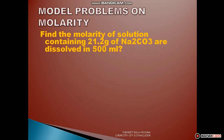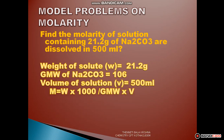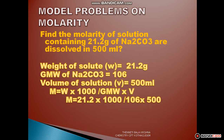Problem 4: Find the molarity of a solution containing 21.2 grams of Na2CO3 dissolved in 500 mL of solution. Given: weight W is equal to 21.2 grams. The gram molecular weight of Na2CO3 is 106, calculated as 2 into 23 plus 12 plus 3 into 16. Volume is 500 mL. Since volume is in millilitres, we use the formula W into 1000 by gmw into V. Substituting: 21.2 into 1000 by 106 into 500, we get 0.4 molarity.